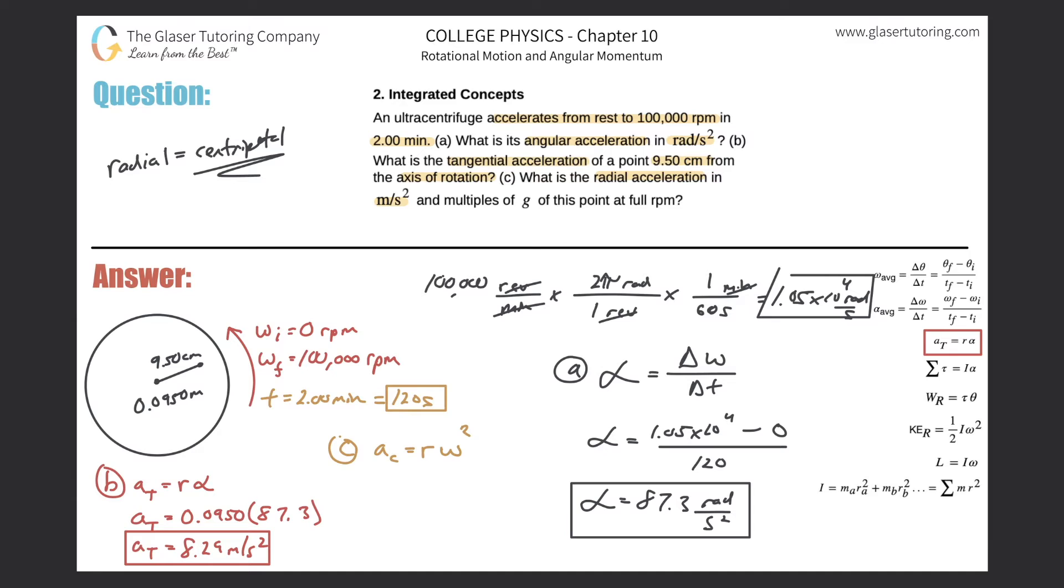So basically all we need to know to figure out centripetal acceleration is the radius of rotation and the angular velocity. Here we know all the values, thank goodness. And it says of this point at full RPM. So the full RPM was 100,000 revolutions per minute, which had the value of 1.05 times 10 to the fourth radians per second. So just plugging in the values: the radius is 0.0950 multiplied by the angular velocity squared. So this is 1.05 times 10 to the fourth, and that is squared.